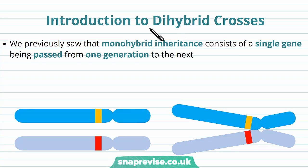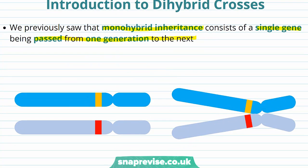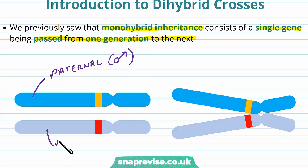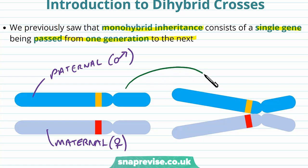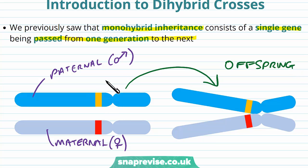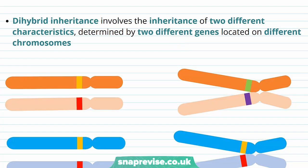In the previous videos we saw that monohybrid inheritance consists of a single gene being passed from one generation to the next. We looked at how we can take the alleles of a paternal and a maternal chromosome and see through a Punnett square which alleles will be inherited by the offspring. Dihybrid inheritance on the other hand involves the inheritance of two different genes or two different characteristics, each determined by a different gene located on different chromosomes.